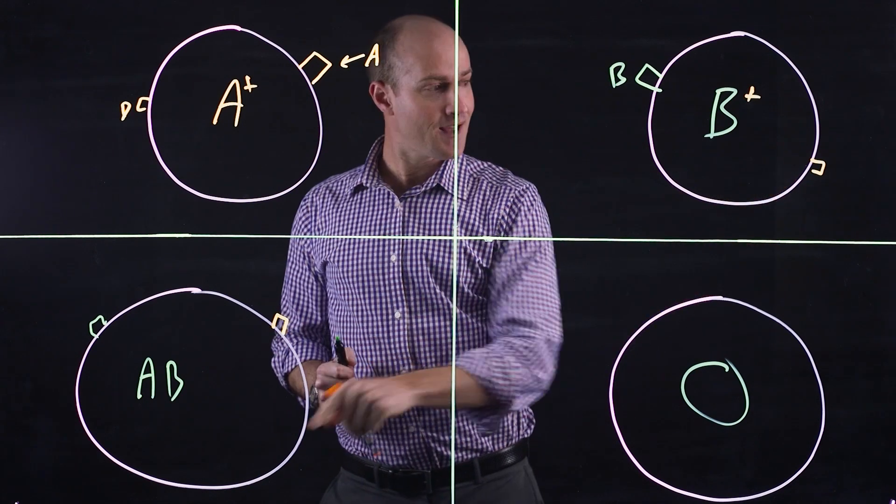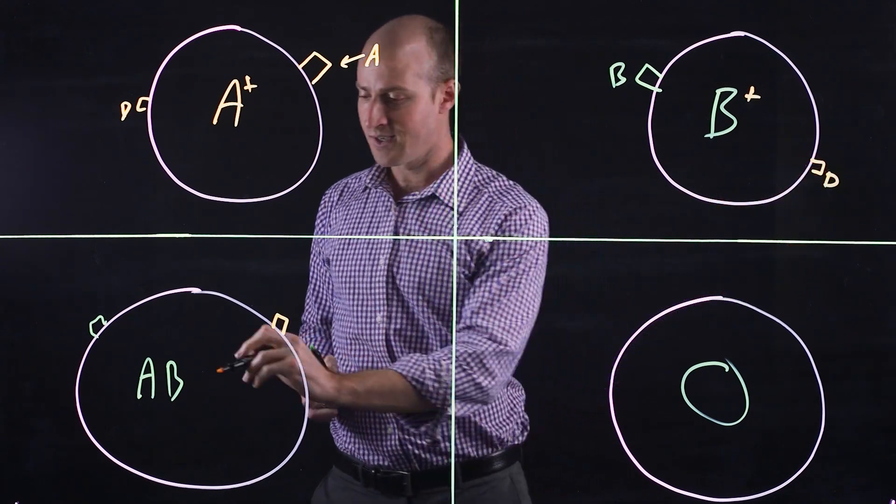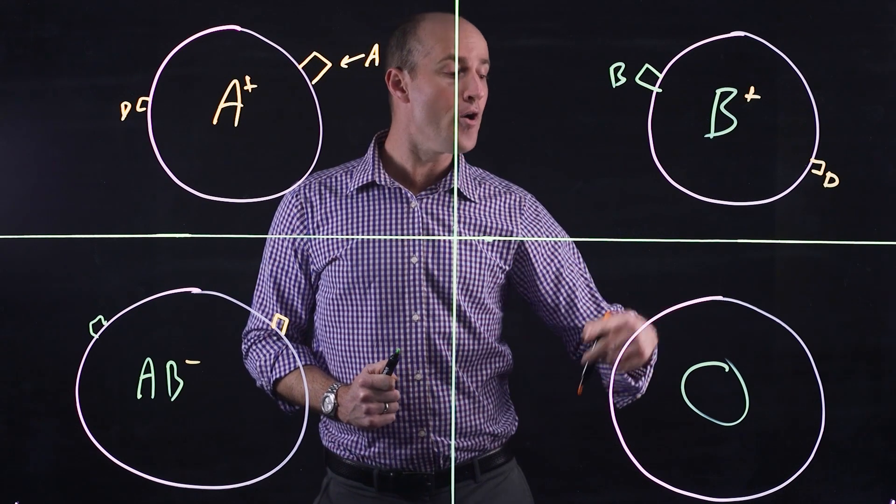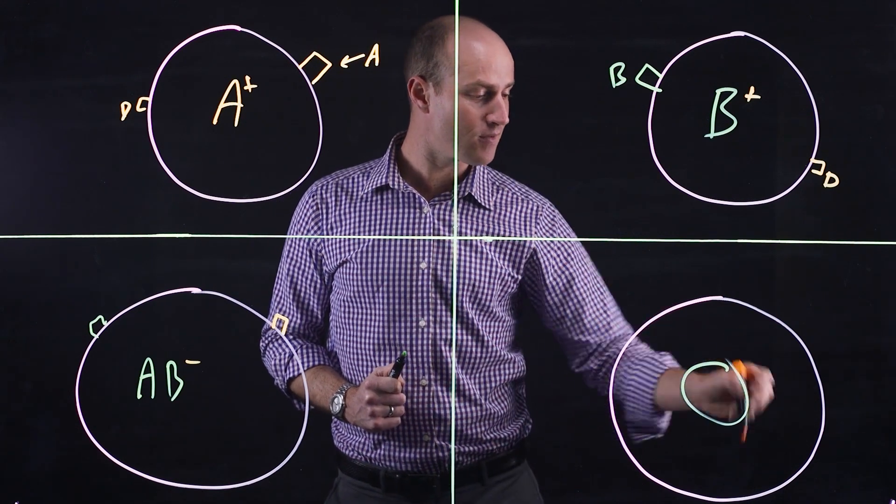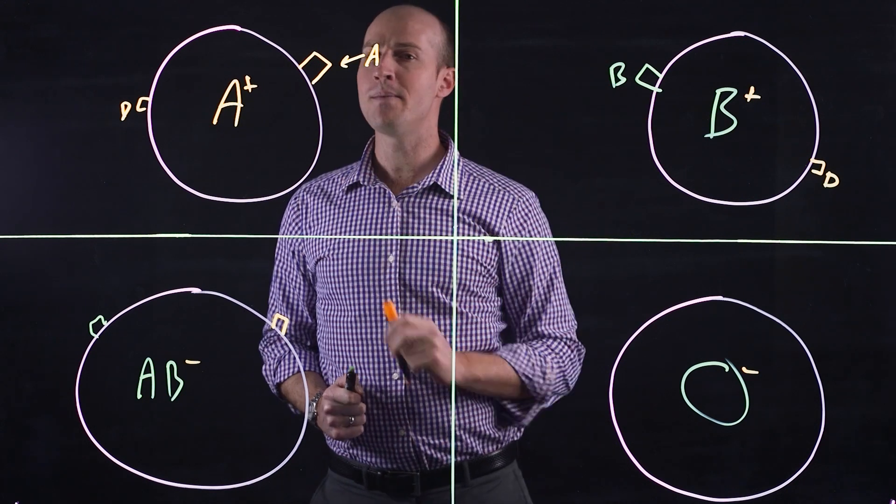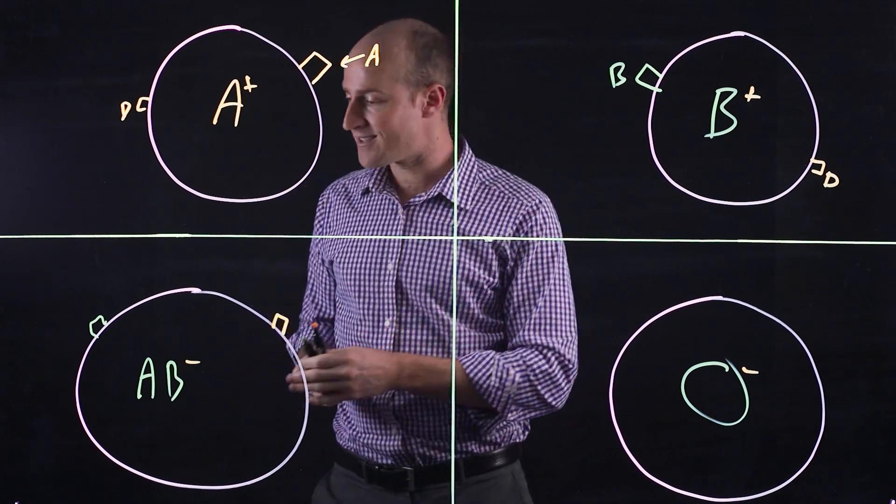Notice this one doesn't have the second molecule, does not have the rhesus, so AB negative. O negative actually has nothing—no rhesus, no proteins, no A, no B. Why can't B mix with A though? Well, that's something different.